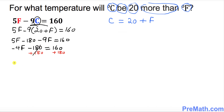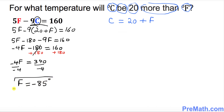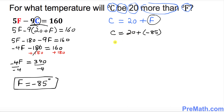We add 180 to both sides, so negative 4F equals 340. Dividing both sides by negative 4, F turns out to be negative 85 degrees. Now we know C equals 20 plus F, so C equals 20 plus negative 85, which simplifies to C equals negative 65 degrees.